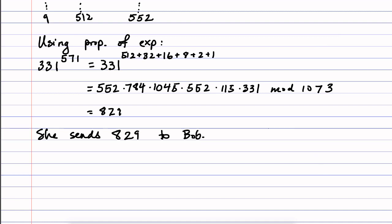Now on his end, when he receives that message, he decrypts it by raising 829 to the power of his private key. So Bob decrypts by computing 829 to the power of 835, that was his d in the private key. And that turns out to be 331 mod 1073. So he recovers the original message.